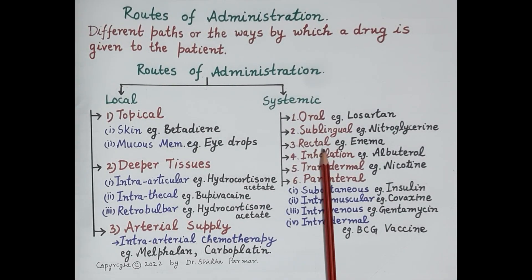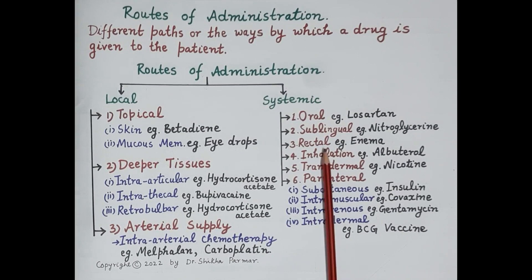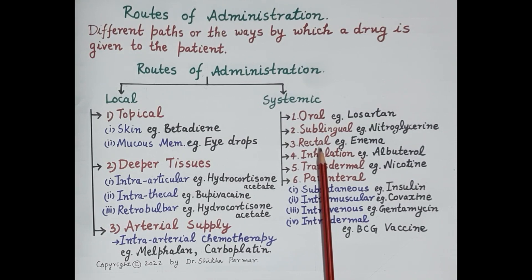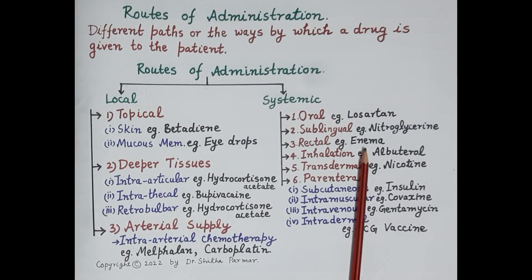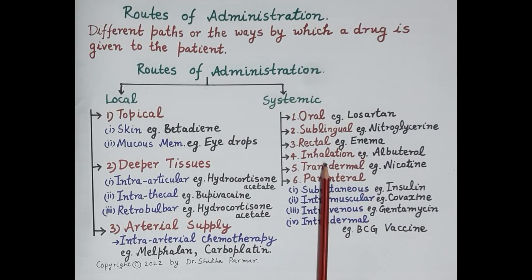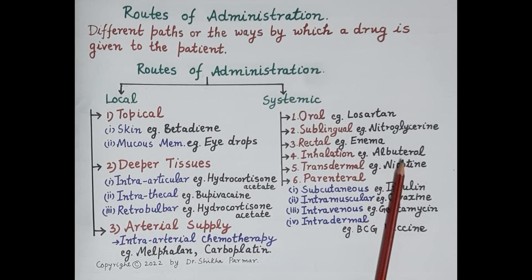The third systemic route is the rectal route. The drug is usually in the form of a suppository, which is inserted into the rectum and absorbed from the rectal mucous membrane into the blood. This route is very inconvenient, absorption is incomplete and highly erratic. Examples include suppositories for hemorrhoids and enemas injected in the rectum for management of constipation. The fourth systemic route is inhalation, where the drug is inhaled as a gas or aerosol — for example, albuterol asthma inhaler, which produces rapid bronchodilation.